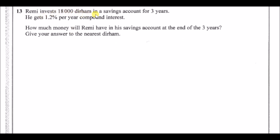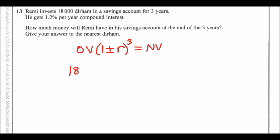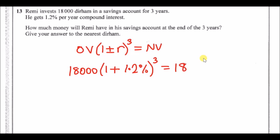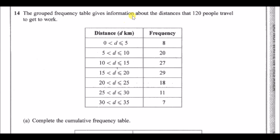Number 13: Remy invests 18,000 dirhams for three years at 1.2% per year compound interest. Using the compound interest formula: 18,000 × (1 + 0.012)³. They want the answer to the nearest dirham, so the result is approximately 18,656 dirhams, rounded up from 18,655.8.